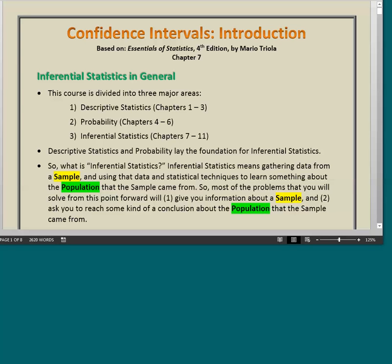This is a crucial point in this course because it is your first introduction to the subject of inferential statistics. This course is divided into three major areas. Descriptive statistics are covered in Chapters 1 through 3, probability is covered in Chapters 4 through 6, and inferential statistics is covered in Chapters 7 through 11. Descriptive statistics and probability lay the foundation for inferential statistics.